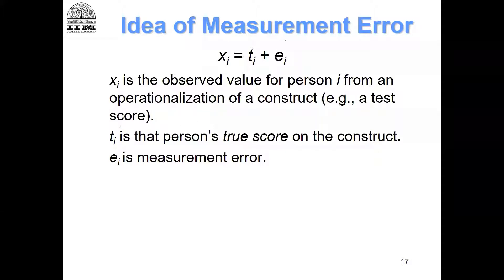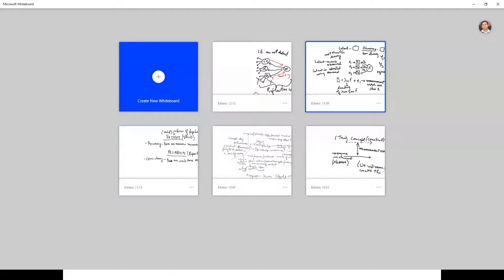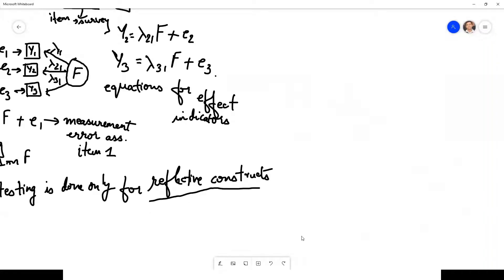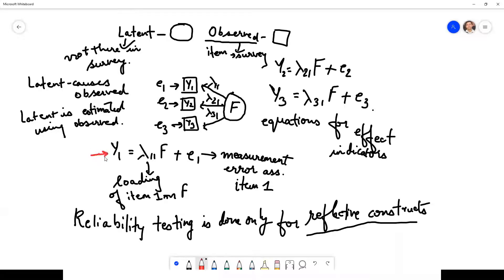So what is the idea of measurement? X is the observed score on the item, T is the latent factor, and E is the measurement error. Remember the model of the reflective indicator that we had — this was a reflective indicator, and we had written this equation. This is called the measurement equation.